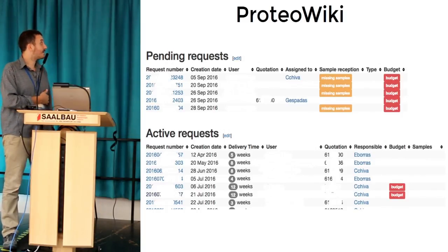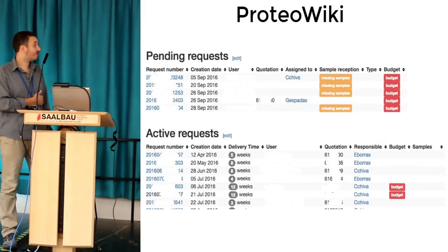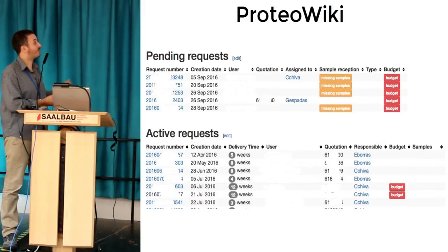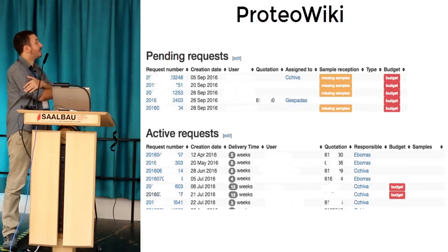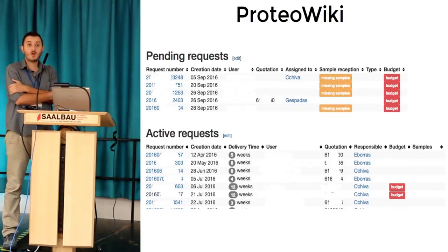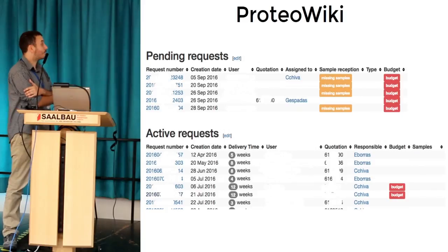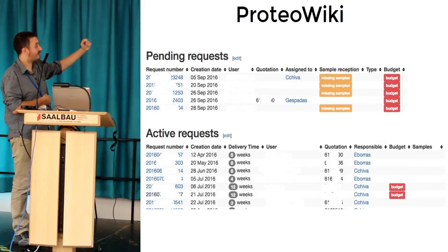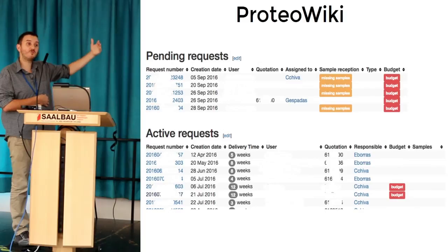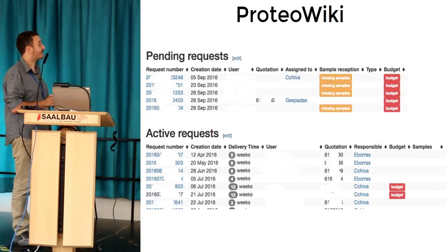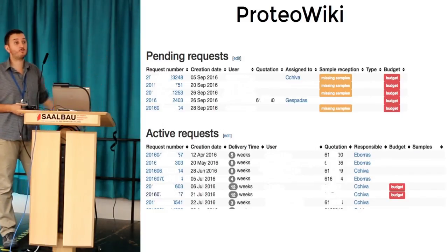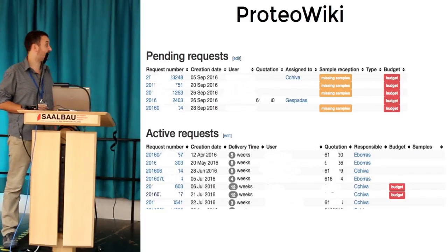In the end, it's a single interface — a multimedia wiki. You have different requests, so the people in the lab can access the different things. This is a request that is still not approved by a manager, then we have the active requests that are in process, etc. The color scheme is basically from Bootstrap.